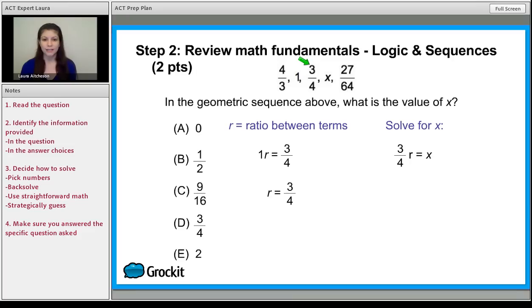Now what's tricky is the R is also 3 over 4. So that's why this is a little bit tricky. But again, you don't have to use a formula. So 3 over 4 times 3 over 4 is going to equal X. That's equal to 9 over 16. And that's answer choice C, and you're done.